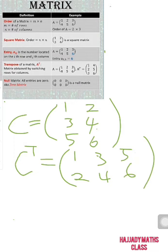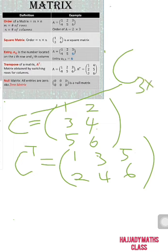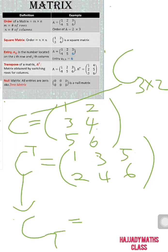Matrix C has the dimension of three by two — three rows and two columns. While our C transpose will be the other way around, because we are switching. C transpose has two rows and three columns — so we have two by three. That is the definition of transpose.